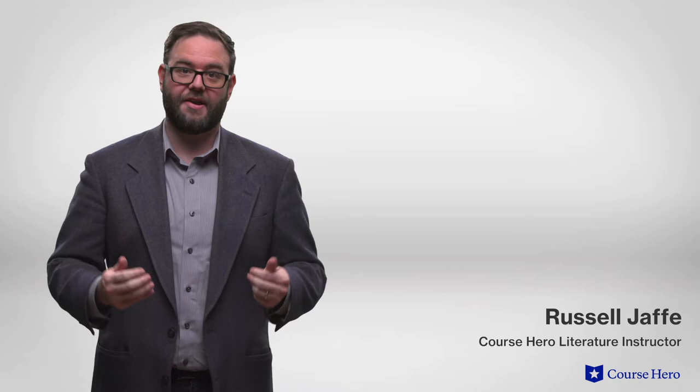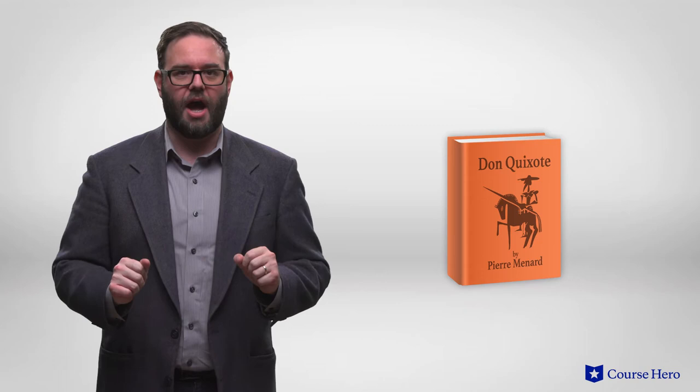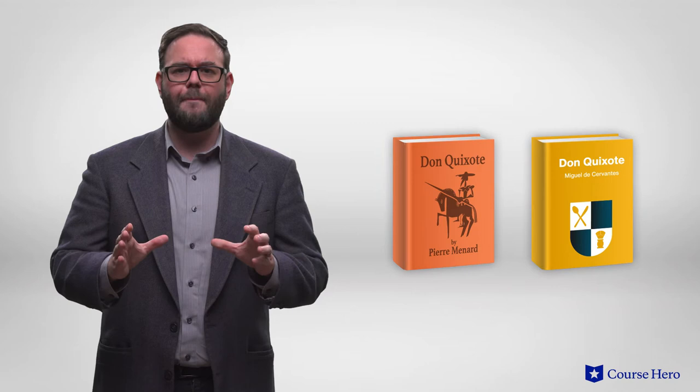In Pierre Menard, author of Don Quixote, in the Garden of Forking Paths, Part 1, Aficiones, a narrator describes 20th century author Pierre Menard's subterranean, interminably heroic, peerless and unfinished work, consisting of two chapters of Don Quixote, chapters 9 and 38, plus a fragment of chapter 22.